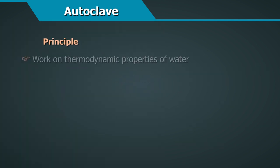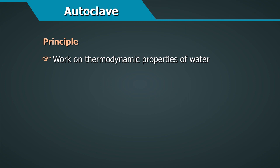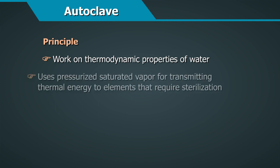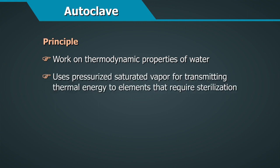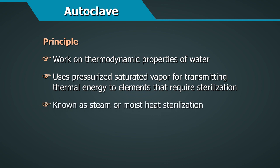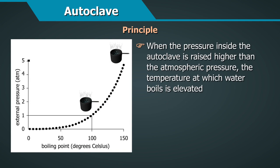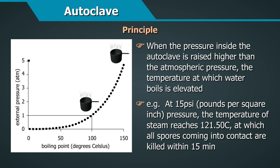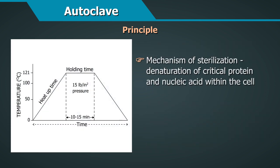Autoclaves work by taking advantage of the thermodynamic properties of water. They use pressurized saturated vapor for transmitting thermal energy to elements that require sterilization. This method is known as steam or moist heat sterilization. When the pressure inside the autoclave is raised higher than atmospheric pressure, the temperature at which water boils is elevated. For example, at 15 psi pressure, the temperature of steam reaches 121.5 degrees centigrade, at which all spores are killed within 15 minutes.